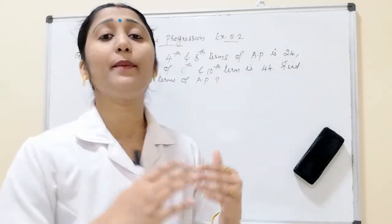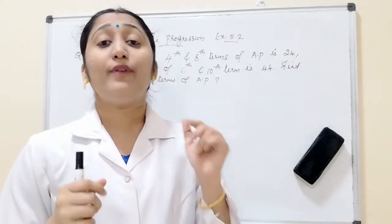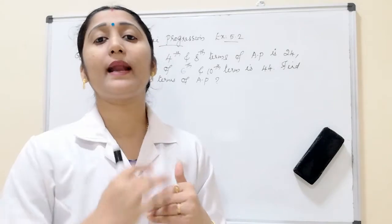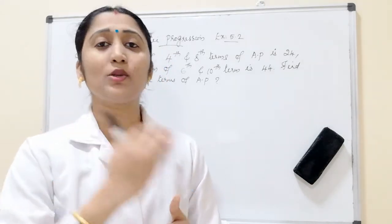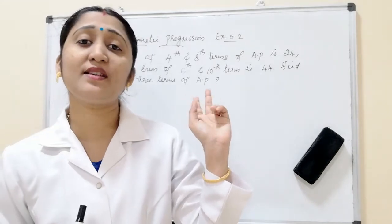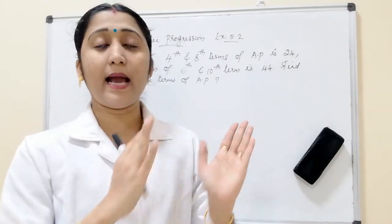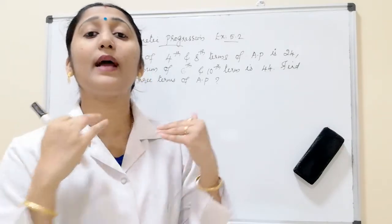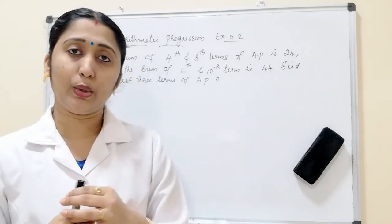To find the arithmetic progression, we need to know the first term and the common difference — then only can you write the arithmetic progression as a number sequence. From the given conditions, the sum of two terms is given and the sum of another two terms is given. Let us see how to solve this.